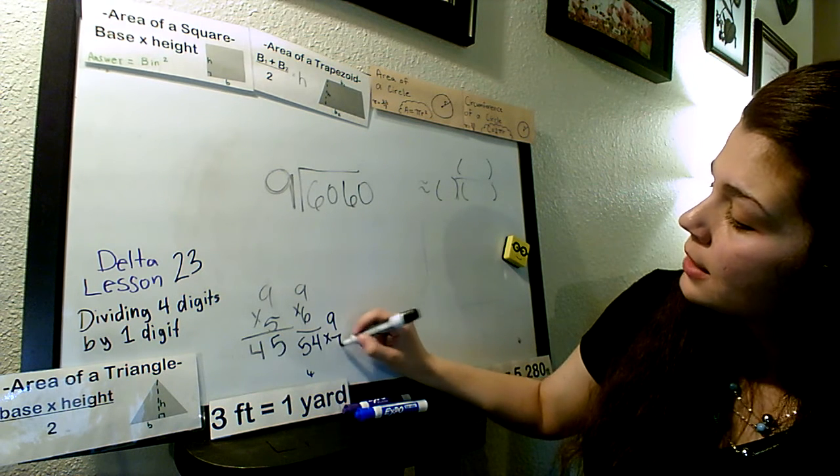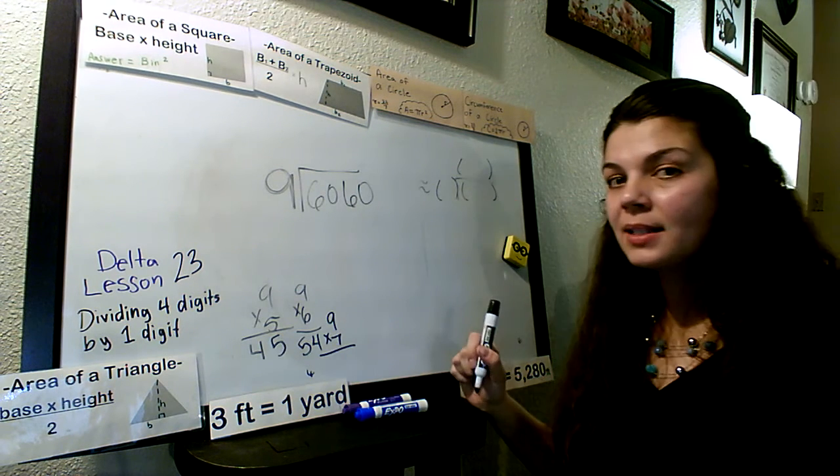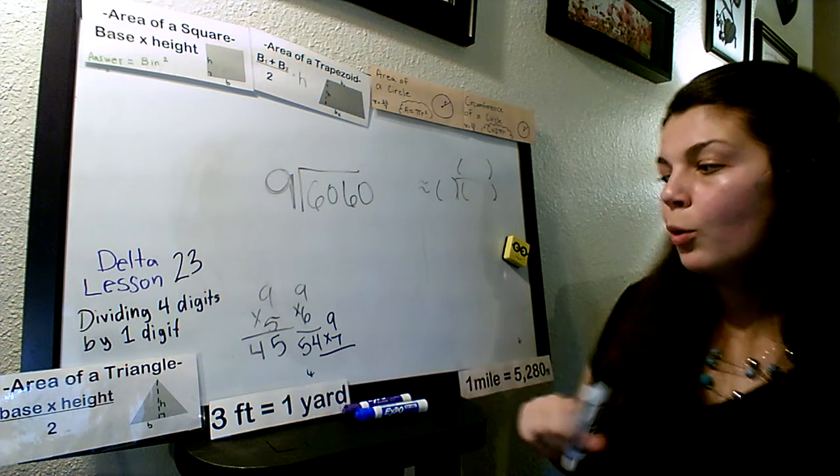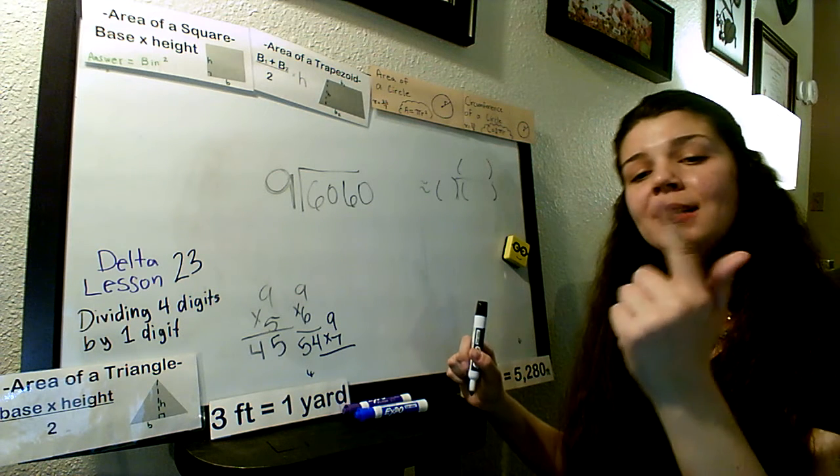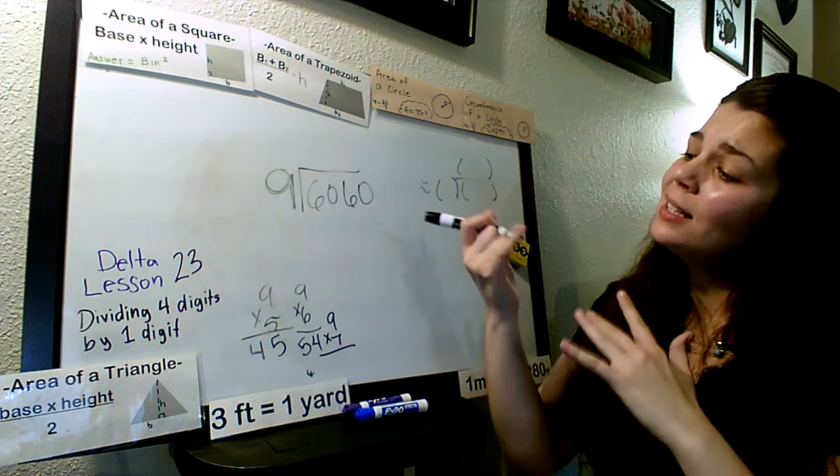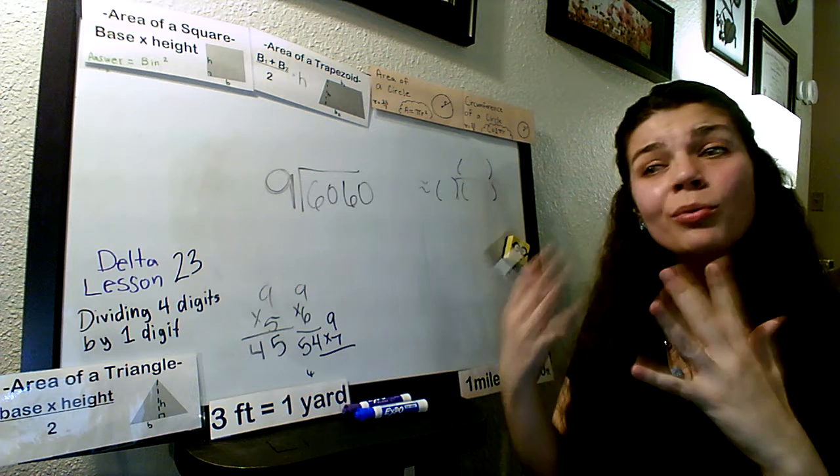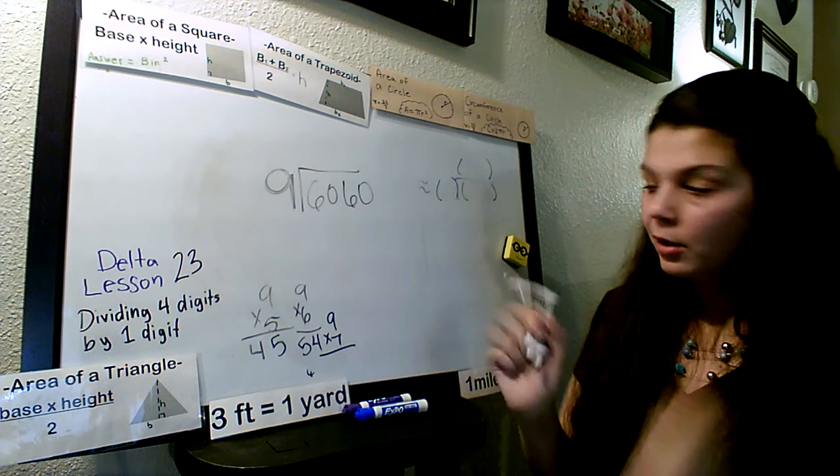9 times 7. 9 times 7. We're going to add 9 more to 54. 54, 55, 56, 57, 58, 59, 60, 61, 62, 63. Too high.